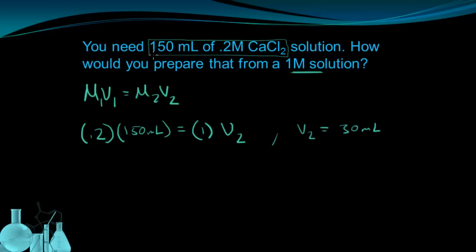The question is asking, how would I prepare 150 milliliters of 0.2M calcium chloride? Well, what this has done so far, the work I've done so far, has told me that 30 milliliters of this 1M solution would give me the right number of moles. Now I just need the right amount of volume.